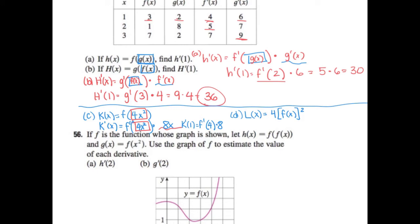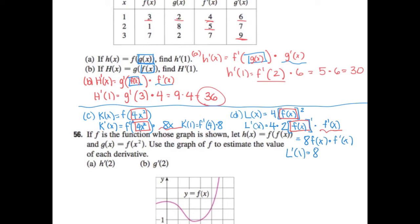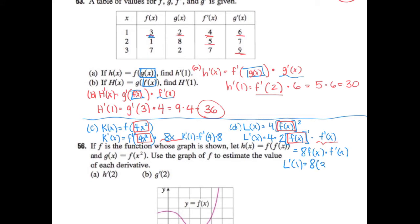Now compare to l of x equals 4 times [f of x] squared — here f of x is my baby because I'm doing box squared. l prime of x: the 4 is just a constant, so it's 4 times 2 times f of x times f prime of x, which equals 8 f of x times f prime of x. To evaluate l prime of 1: 8 times f of 1 times f prime of 1 equals 8 times 3 times 4, which is 96.